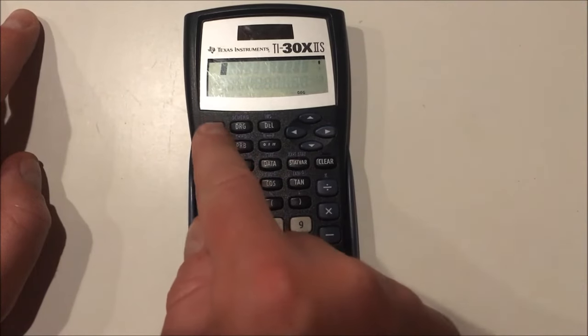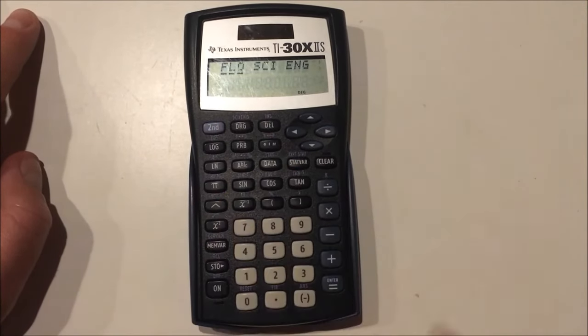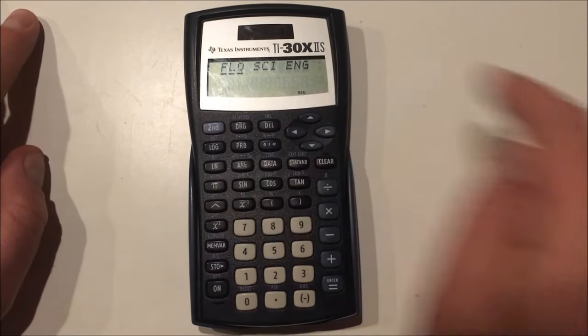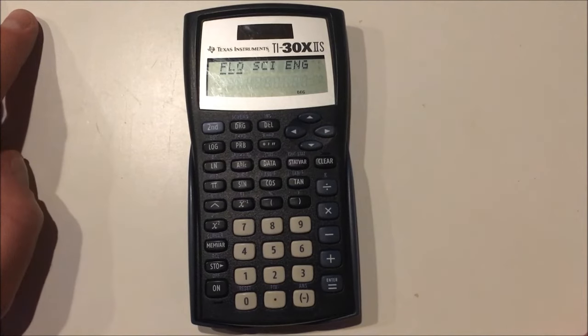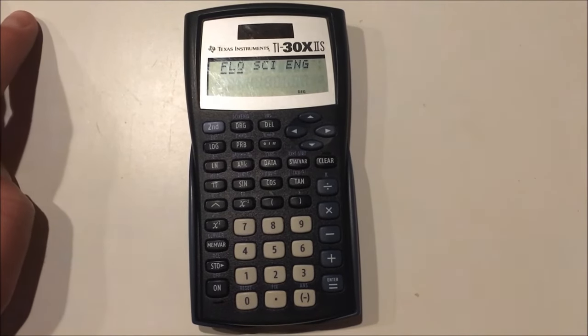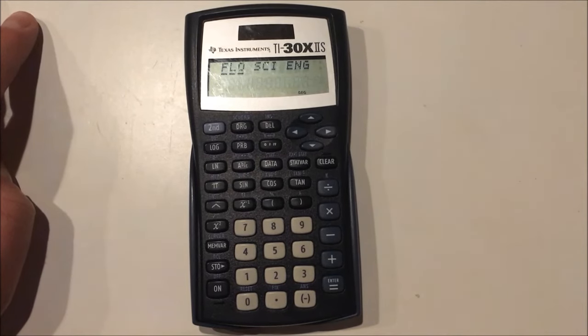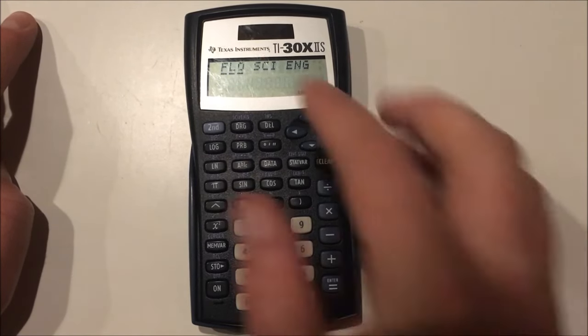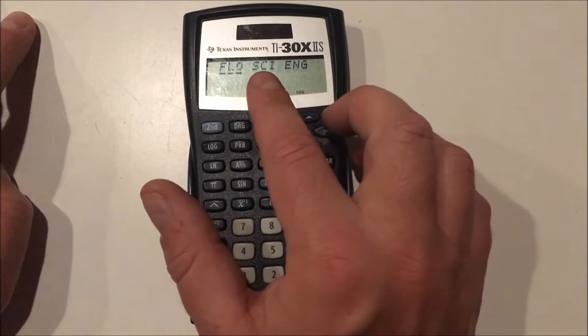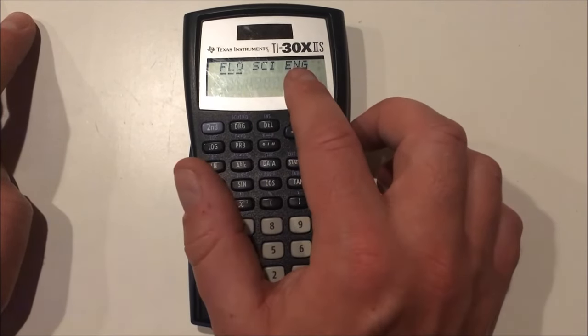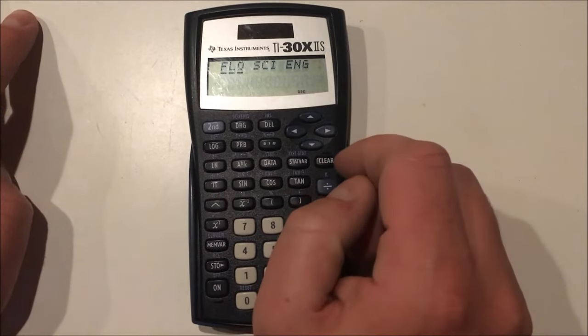So in addition to that, if you press second DRG, you can reconfigure how the calculator handles numbers. It is set to FLO, which stands for floating point numbers. So these are lots of digits where you can move the decimal point around, and that's a floating point number. Scientific numbers can be accessed through the setting here, and engineering settings are set there for numbers.